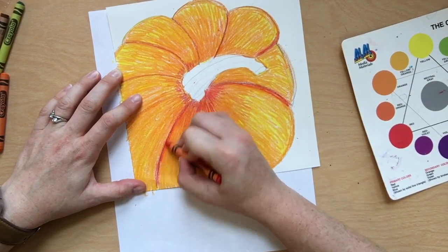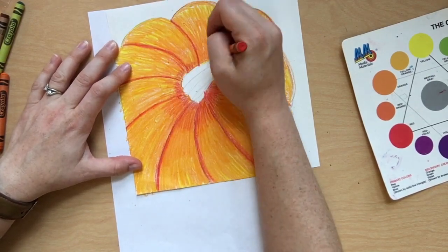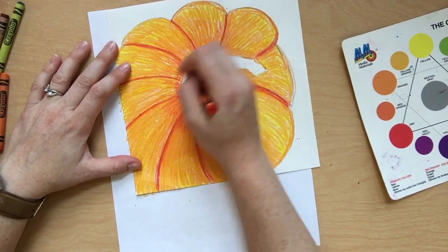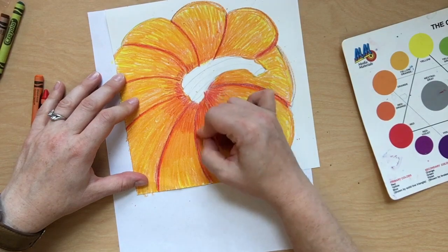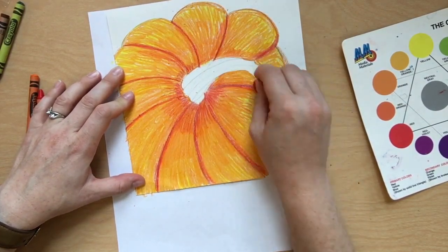Hey, we made it! I'm noticing that I have a lot of light values, but not a whole lot of dark values. So I grabbed my red-orange crayon again, and I went over the creases and just darkened up some of those original spots that we did.